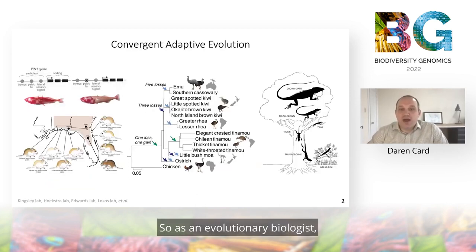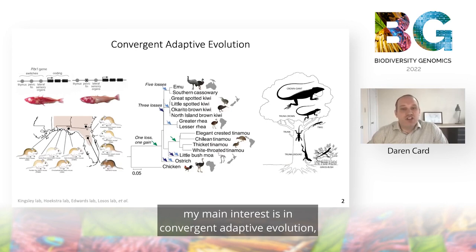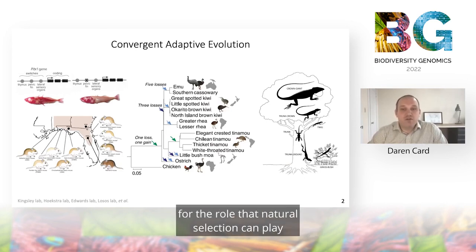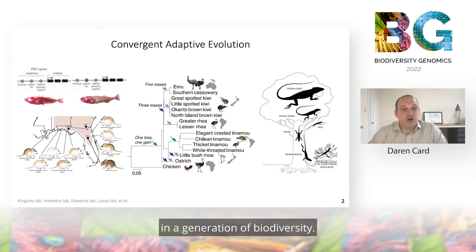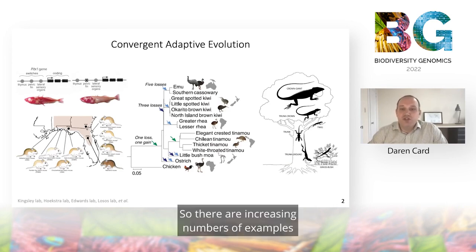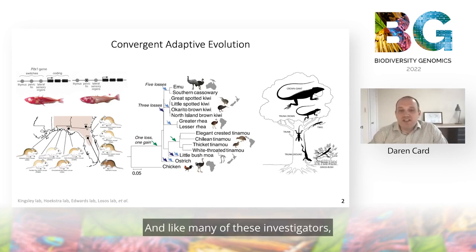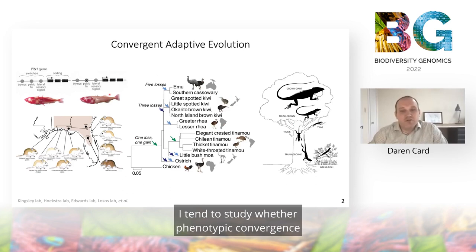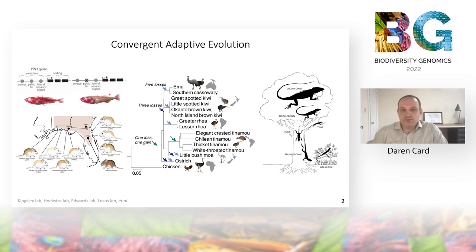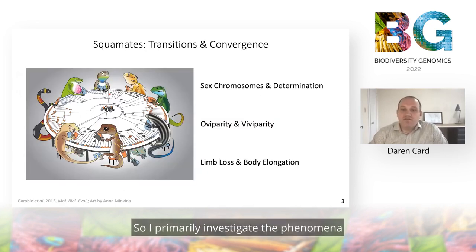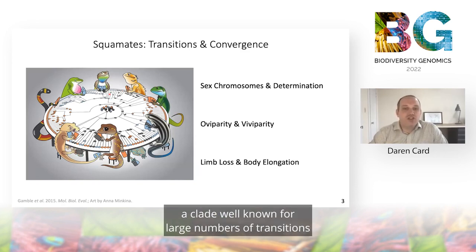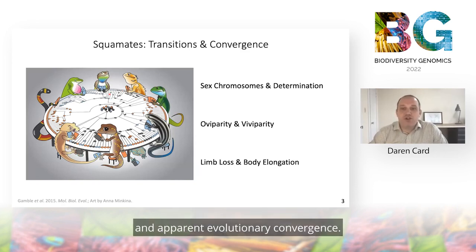As an evolutionary biologist, my main interest is in convergent adaptive evolution, which provides some of the most compelling evidence for the role that natural selection can play in the generation of biodiversity. There are increasing numbers of examples of convergent evolution, including many of the classic ones indicated on this slide. Like many of these investigators, I tend to study whether phenotypic convergence is driven by genetic or molecular convergence.